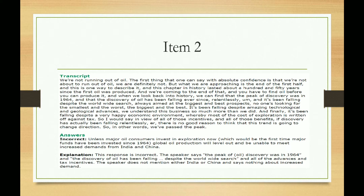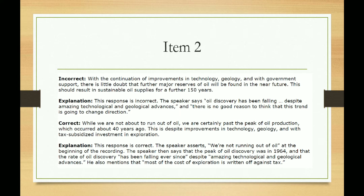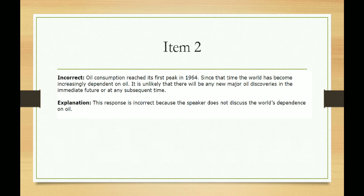The first option is incorrect because the speaker says the peak of oil discovery was in 1964 and the discovery of oil has been falling since then. The second option is also incorrect because oil discovery has been falling despite those factors. The third option is correct: the speaker says we are not running out of oil, then states the peak of discovery was in 1964 and the rate of discoveries has been falling ever since, despite amazing technological and geological advances, and that most exploration costs are written off against taxes. The last option is also incorrect because the speaker does not discuss the amount spent on oil.